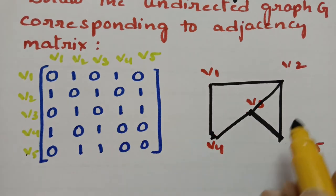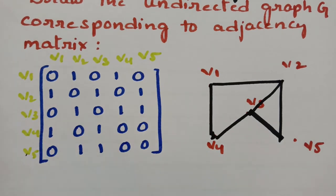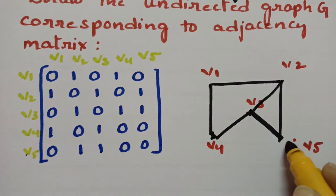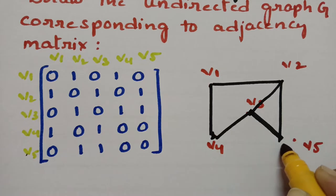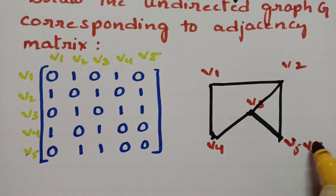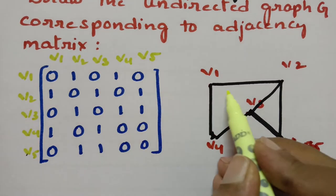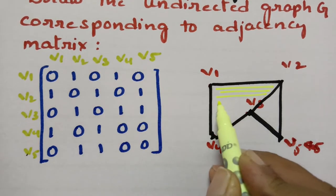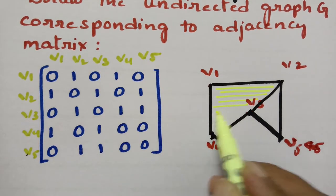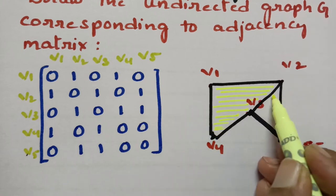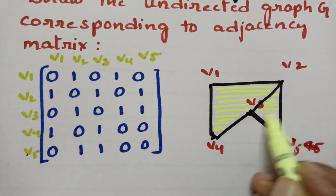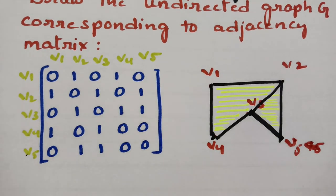So this is the undirected graph. This will be v5. If you have 1 here, you have to take 1 edge. If you have 0, there is no relation. This is how we have to draw the undirected graph.